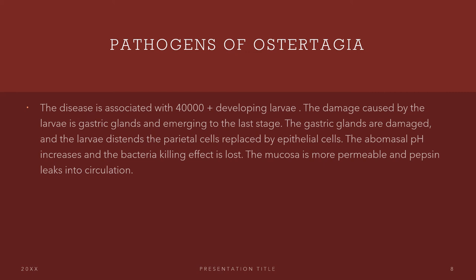Now let's talk about the pathogenesis of ostertagiosis. This disease is associated with more than 40,000 developing larvae. The damage caused by the larvae affects the gastric glands as they emerge to the last stage. The gastric glands are damaged and distended. The parietal cells are replaced by epithelial cells. The abomasal pH increases and the bacteria-killing effect is completely lost. The mucosa becomes more permeable and pepsin leaks into circulation.